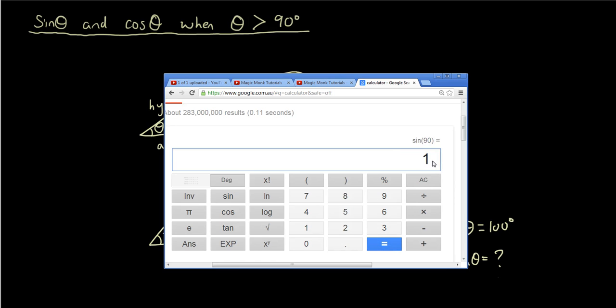Sine 90 degrees is equal to 1. And then let's type in sine, let's say 100 degrees. And now it's gone back down to a number smaller than 1. What about sine 150 degrees? 0.5. Where are these numbers coming from?